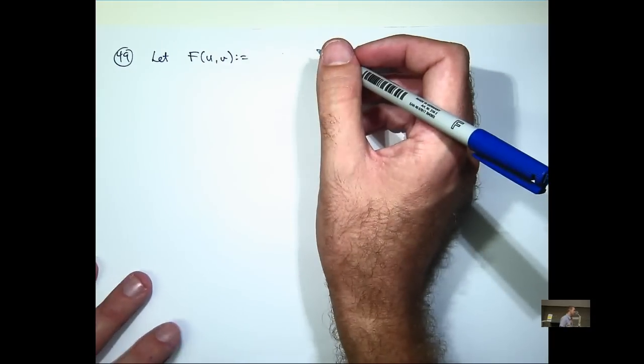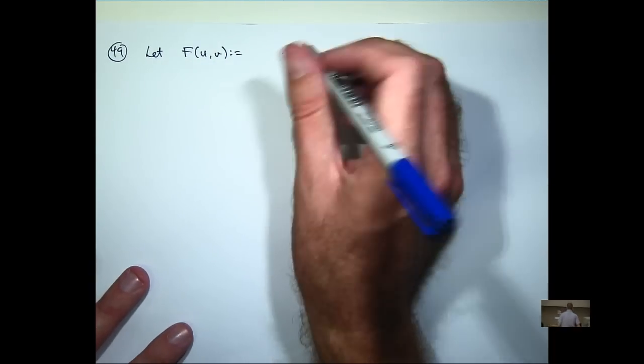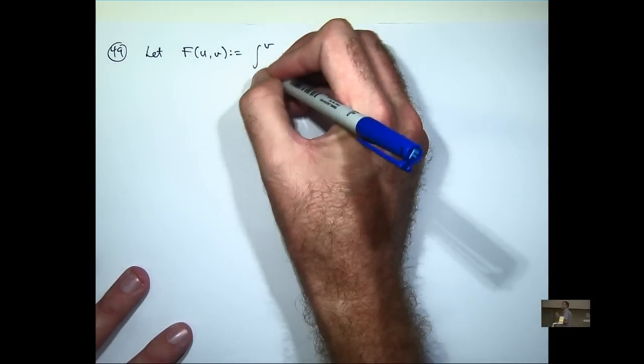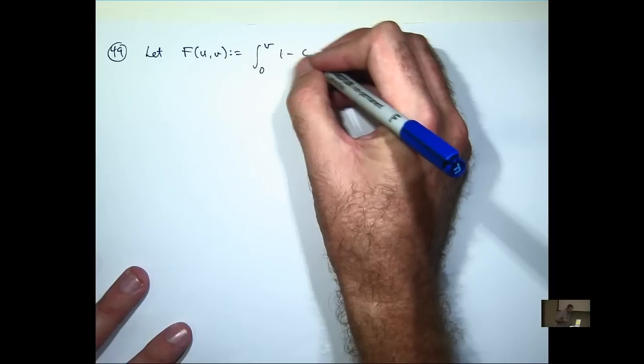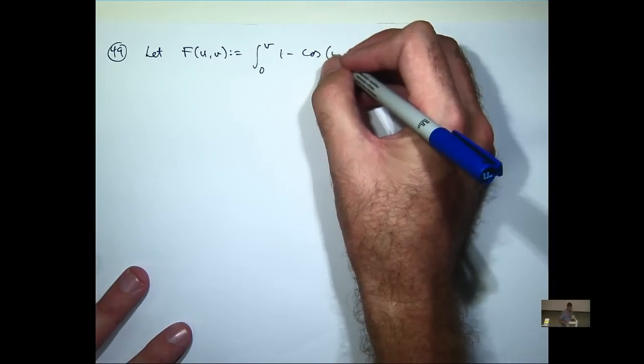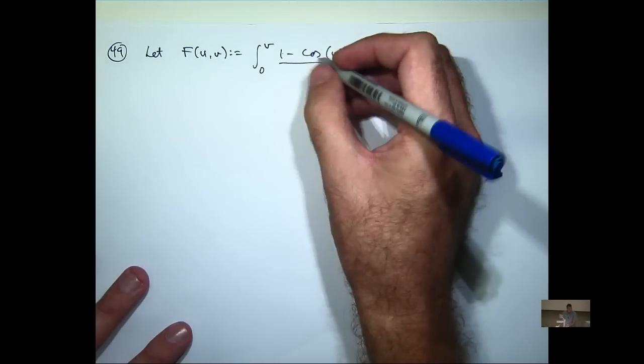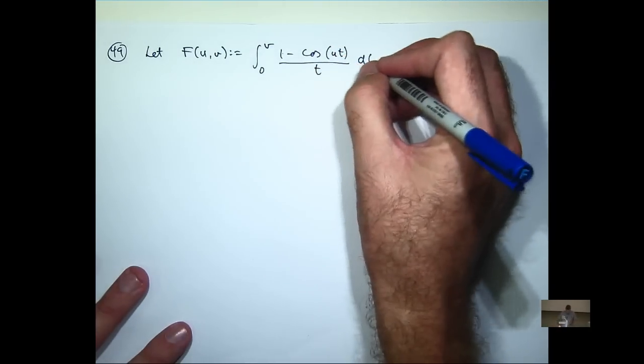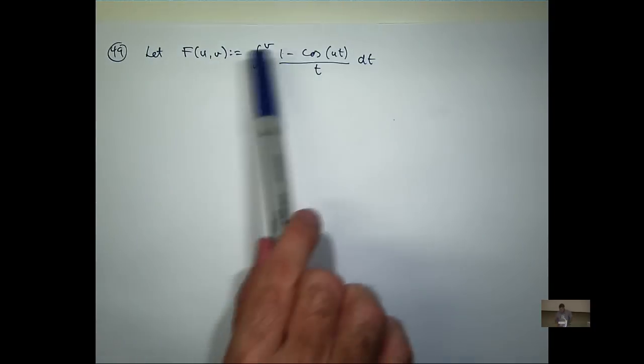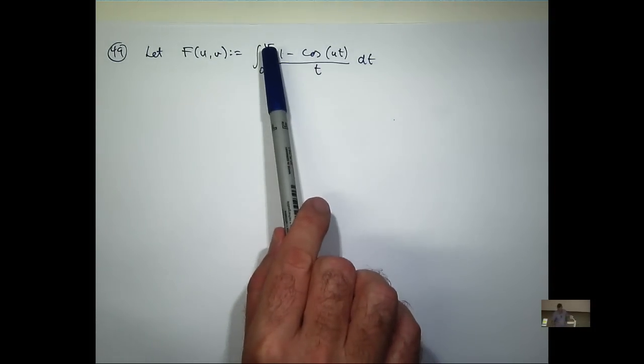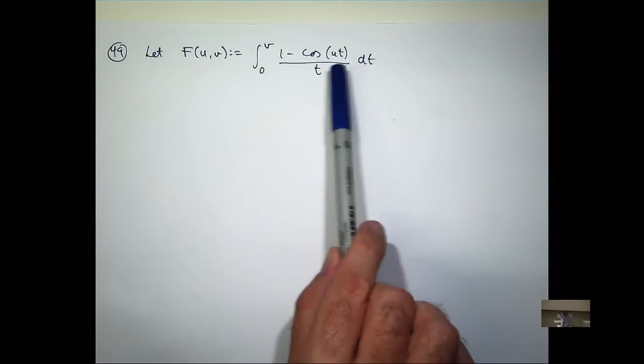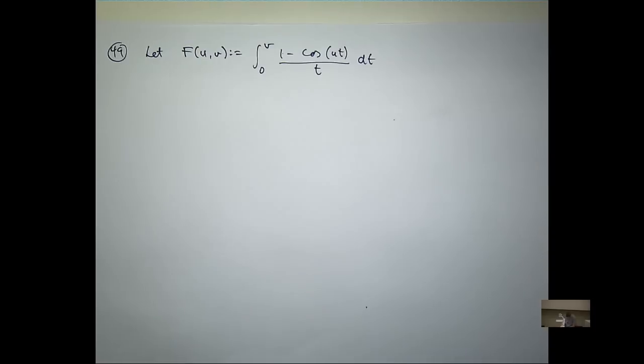We're defining a function of two variables in the following way. Again, you see the V variables, the upper limit of integration, and the T variable is the dummy variable. We want to write down the partials ∂F/∂u and ∂F/∂v.